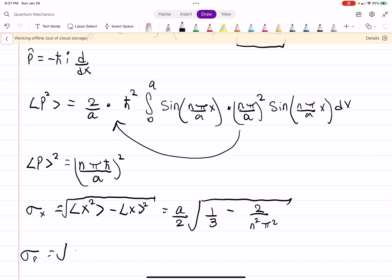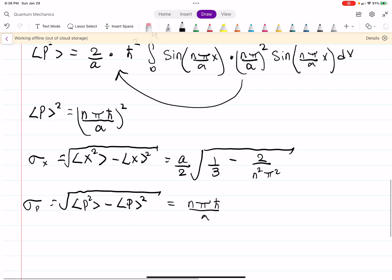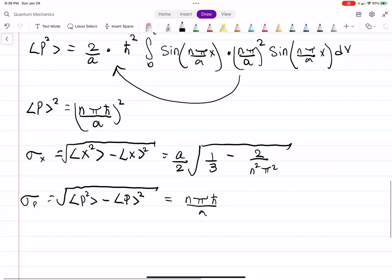And likewise, sigma p can be defined this way. We've done this a lot now, so I don't think this is a huge problem. And when you plug this in, you should get n pi h bar over a.